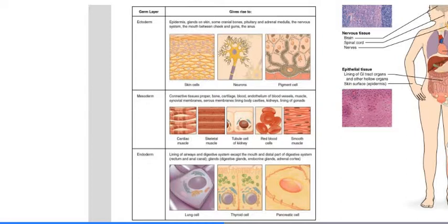Now, in these words, derm basically means tissue. And ecto is outside, meso is middle, and endo is inside.